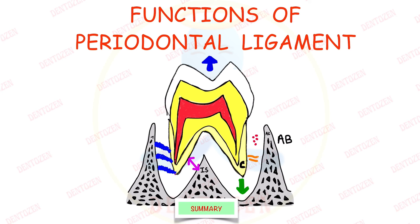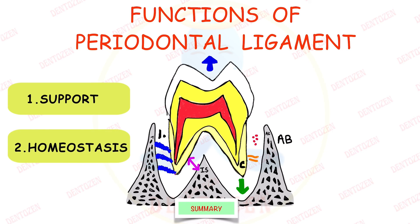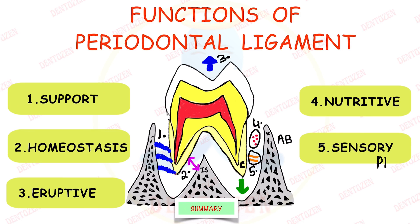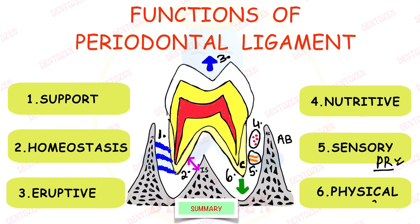Summary of the six functions of the PDL: First, support — mainly by the oblique principal fibers, transmitting forces to the surrounding bone. Second, homeostasis — balance maintained between formation and resorption of PDL structures by cells. Third, eruptive — the ligament helps generate eruptive forces for tooth eruption. Fourth, nutritive — blood vessels provide nutrition and remove waste from cells. Fifth, sensory — receptors provide proprioception, detecting even the slightest tooth movement. Sixth, physical — acts as a shock absorber.